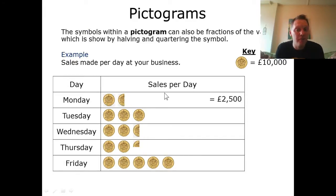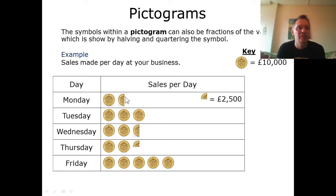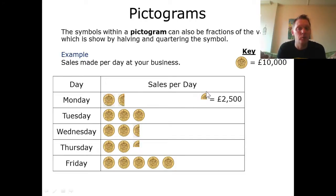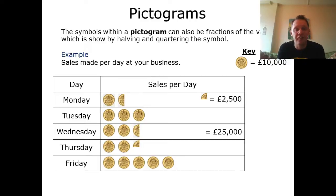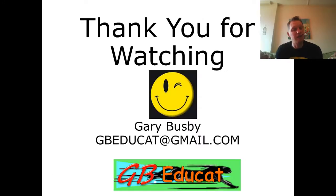Pictograms differ from others because we can cut our image to actually show fractions of that amount. So a quarter of the image represents two thousand five hundred pounds — still the same key. If we've got half of a pound coin, that will be five thousand pounds. So on Wednesday, we've got twenty-five thousand pounds worth of sales, and on Thursday, we've got twenty-two thousand five hundred pounds worth of sales. And that's pictograms.